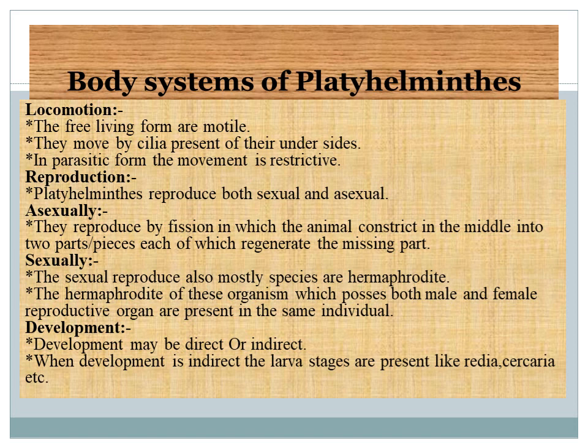In parasitic form, their movement is destructive and they have hooks for attachment to the host body. Reproduction: Platyhelminthes reproduce both sexually and asexually. In asexual reproduction they reproduce by fission, in which the animal constricts in the middle into two parts, each of which regenerates the missing part through regeneration. In sexual reproduction, the species are hermaphrodites.